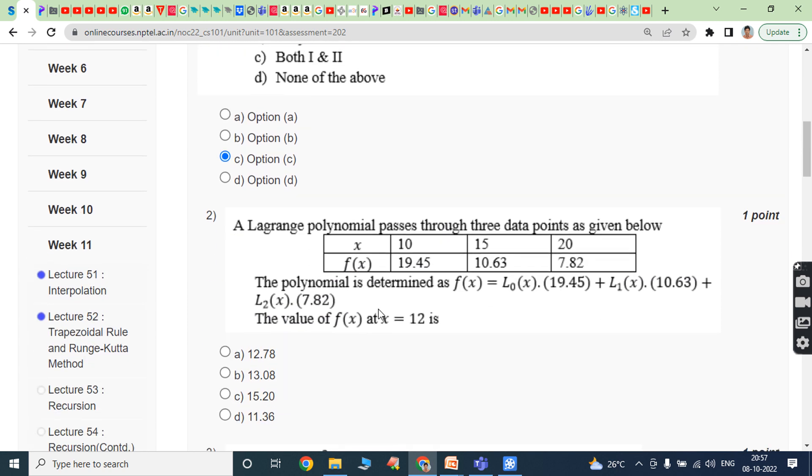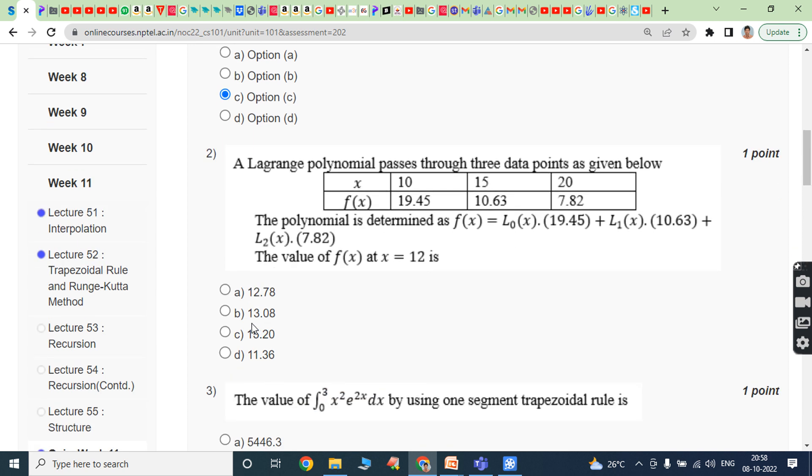Second question: A Lagrange polynomial passes through three data points as given below. X values are 10, 15, 20. F of x values are 19.45, 10.63, 7.82. The polynomial is determined as f(x) equals L0(x) times 19.45 plus L1(x) times 10.63 plus L2(x) times 7.82. The value of f(x) at x equals 12 is option C, 15.20.